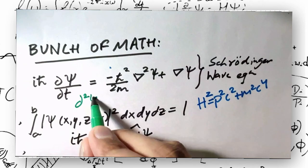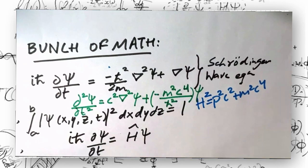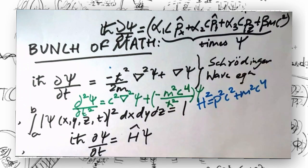A positron, often known as the antielectron, is the antiparticle of an electron. It has the same mass as an electron, but the polarity is reversed.